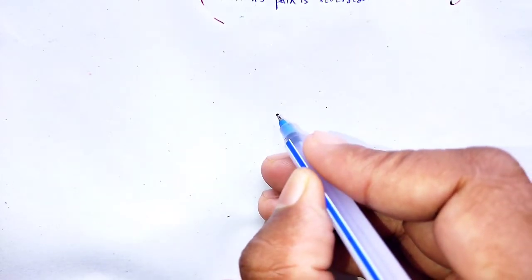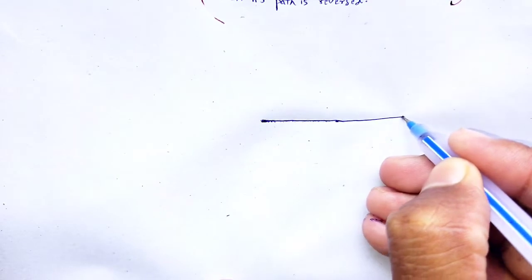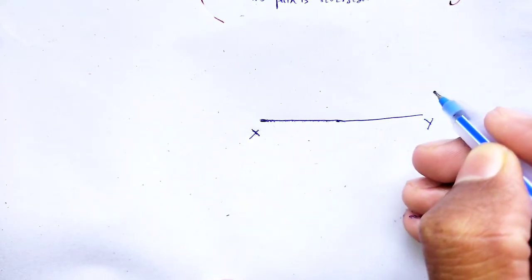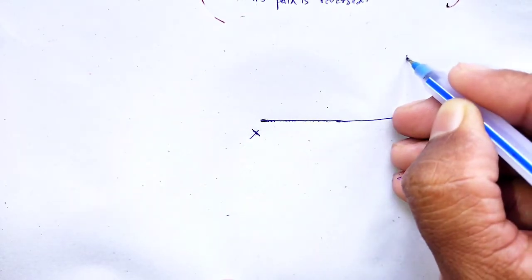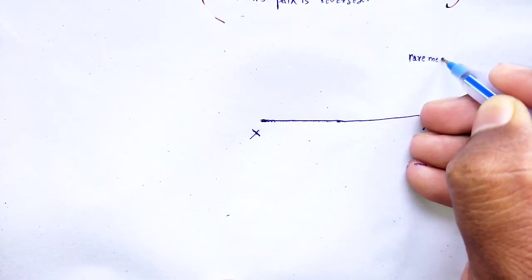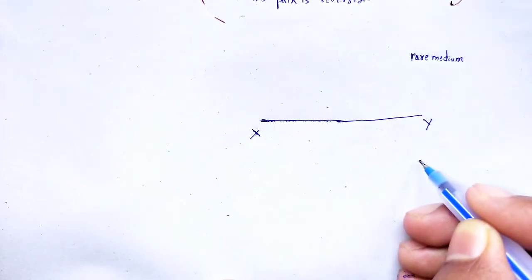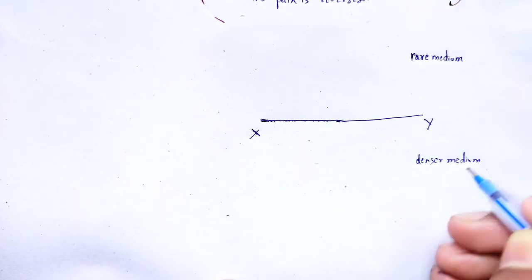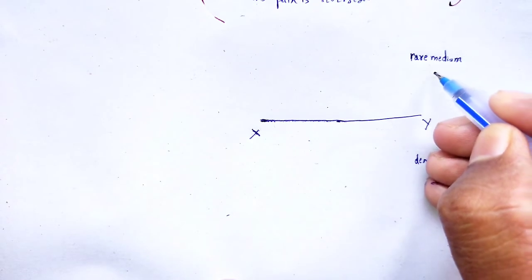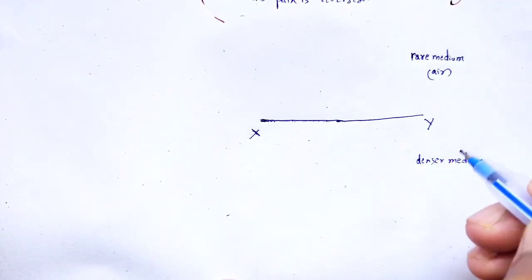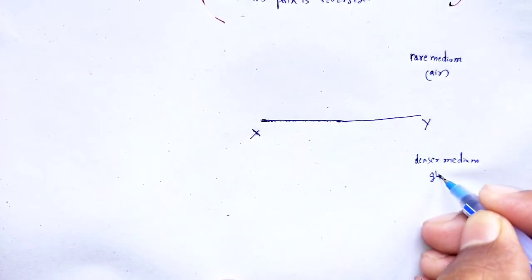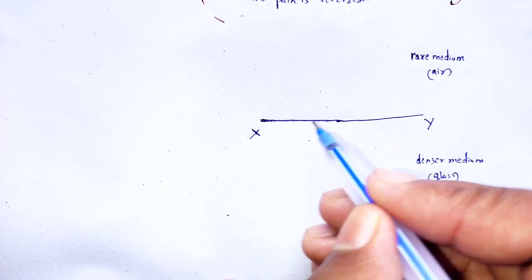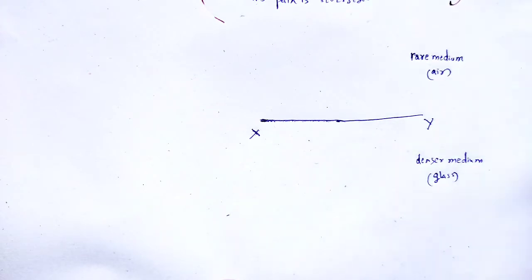Let us consider XY as the interface of rare medium and denser medium. Here is the rare medium — for example, air — and the denser medium, let it be glass. Glass is denser in comparison to air. XY is the interface separating both the rare medium and the denser medium.